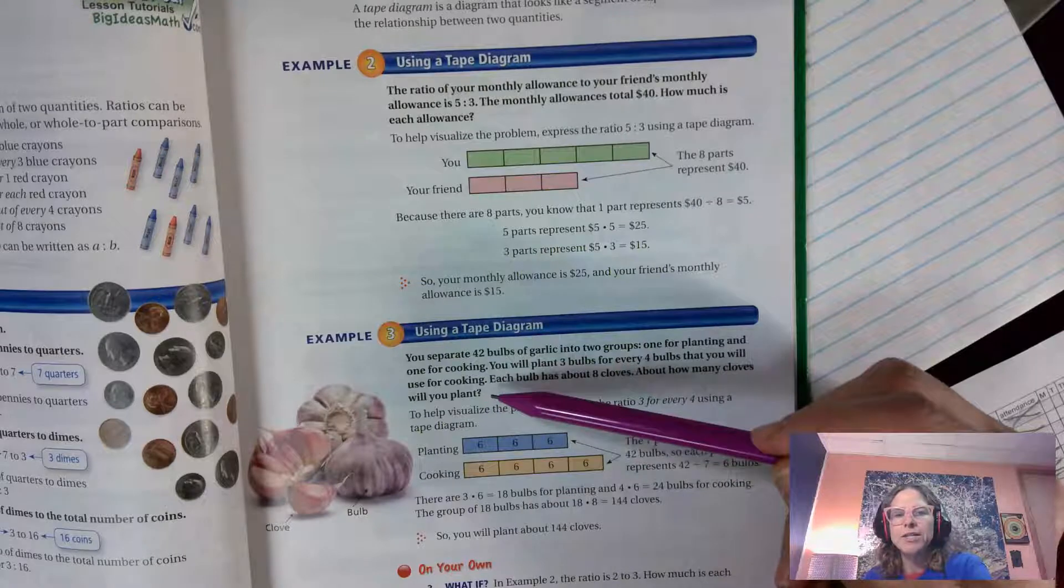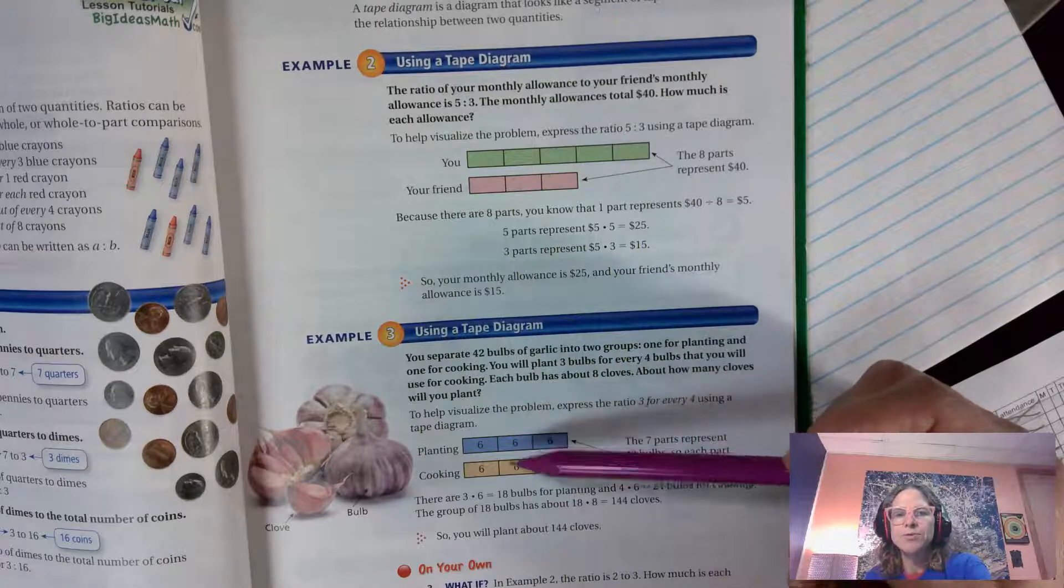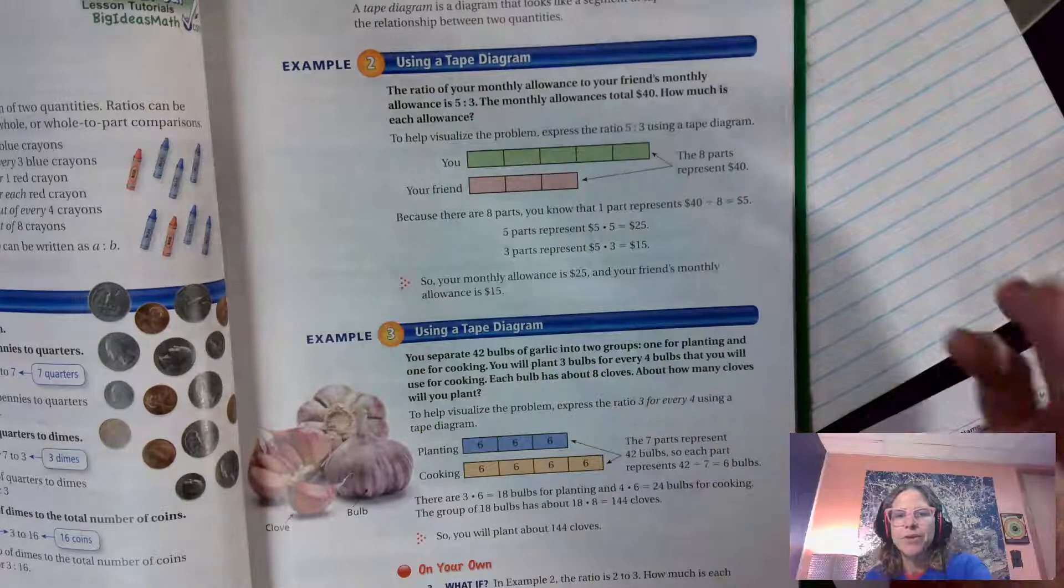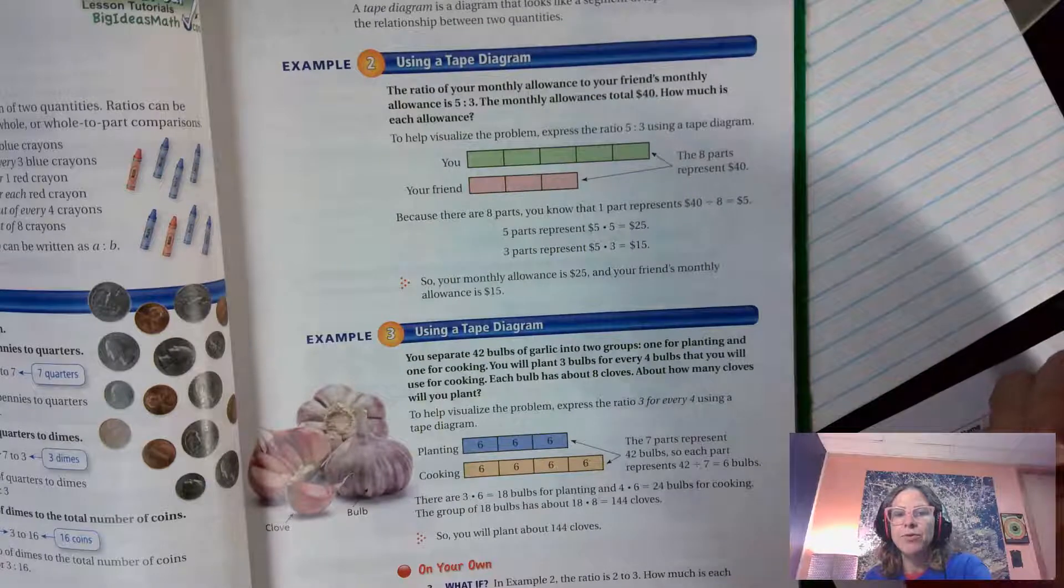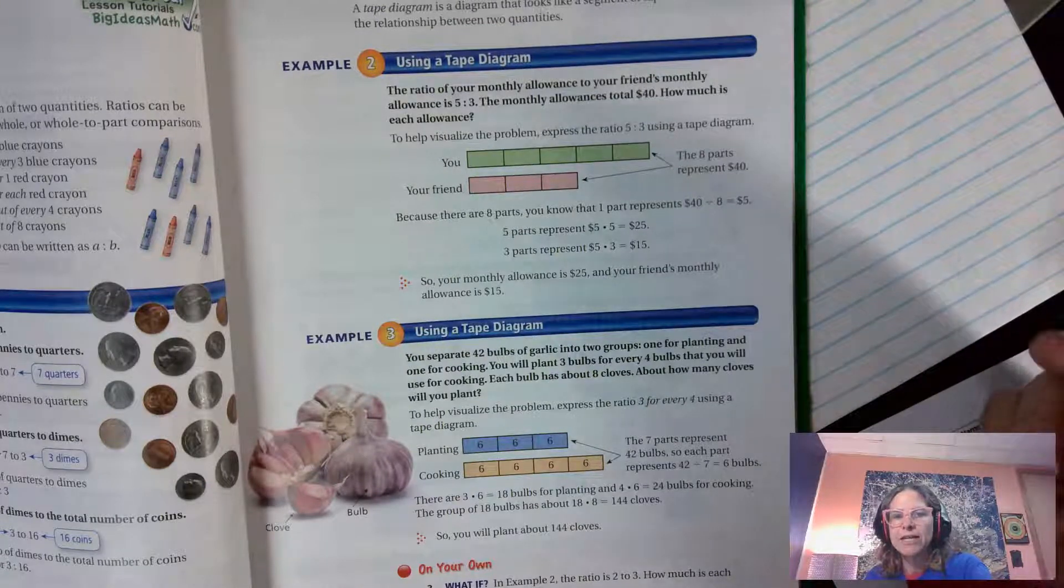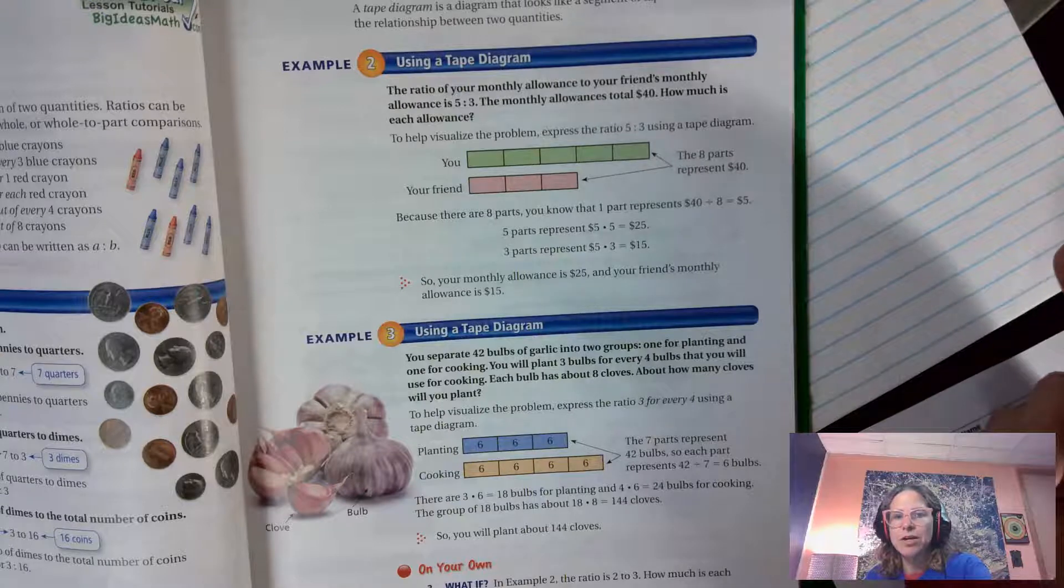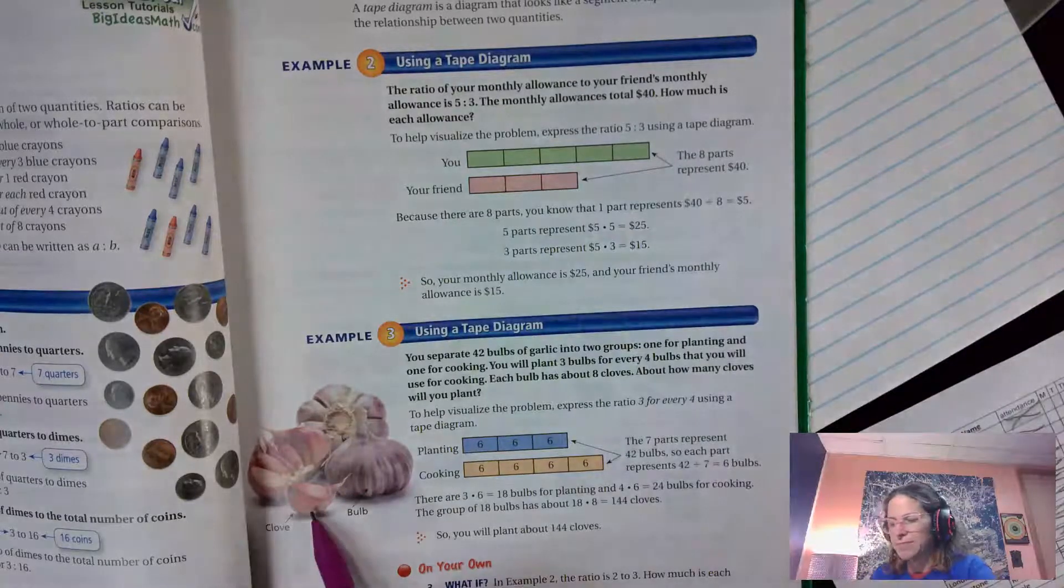You separate forty-two bulbs of garlic into two groups, one for planting and one for cooking. You plant three bulbs for every four bulbs that you will use for cooking. Each bulb has about eight cloves. A clove is like this tiny little part that makes up the bulb.